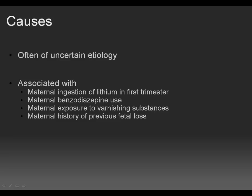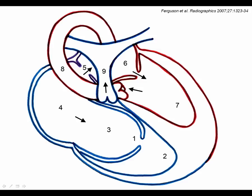I would like to introduce Dr. Connor Meehan, who is going to be focusing on the imaging and treatment of Epstein's anomaly. This schematic diagram of the heart depicts the morphologic abnormality in Epstein's anomaly. The left heart is denoted by red ink and the right by blue ink.